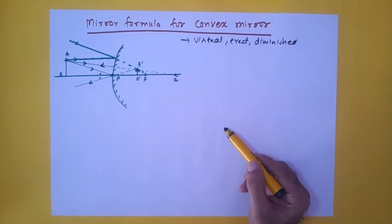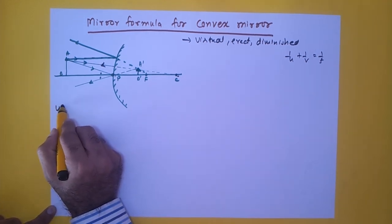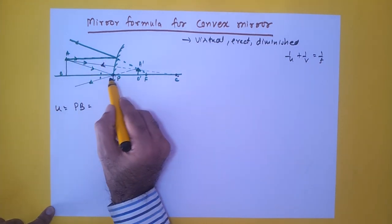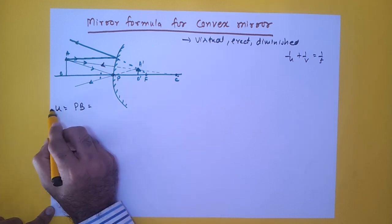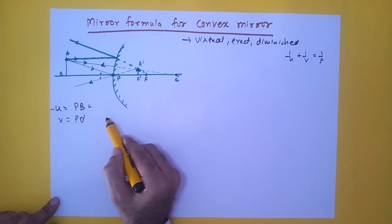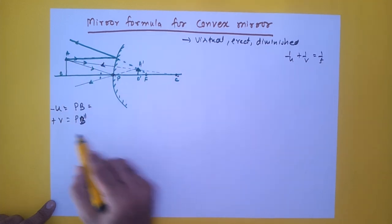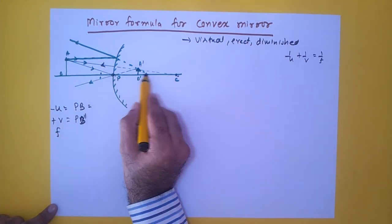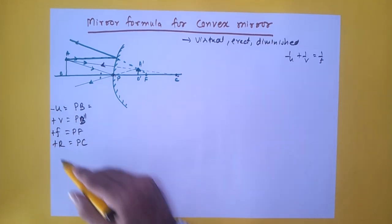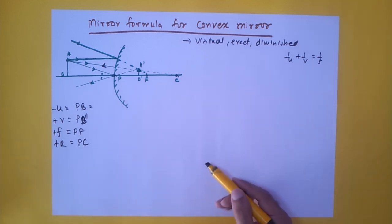So A'B' is the image. Now we want to derive the equation 1/U + 1/V = 1/F. U will be PB, the distance of the object from the pole. The direction of the incident ray gives U a minus sign. V is PB' and this will have a positive sign because PB' is in the same direction as the incident ray. Similarly, F will be PF with a positive sign, and R will be equal to PC, also positive. This is how you apply the sign convention, and you can notice the difference from a concave mirror.